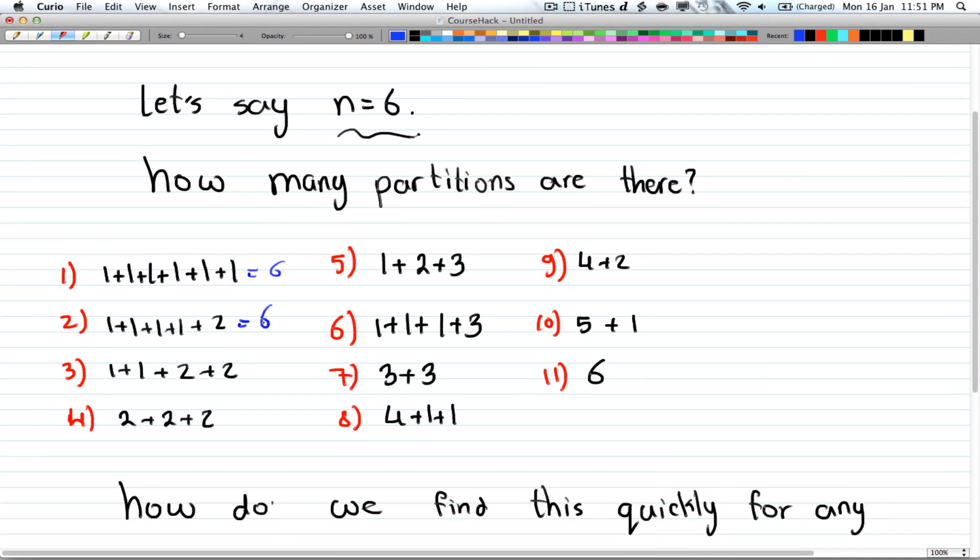Three twos you get 6, one one one and three that's 6, two threes, a four and two ones, a four and a two, five and a one and a six. So how many ways are there? That's a total of eleven ways.